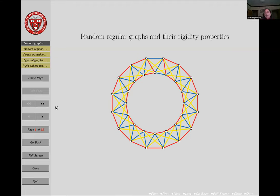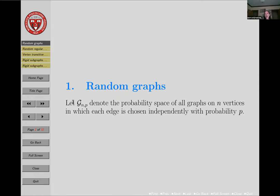I want to tell you a little bit about random graphs and why I think the rigidity properties are interesting. The first question is: what's a random graph? Most people know this random graph model where you consider the probability space of all graphs on n vertices in which each edge is chosen independently with some probability p.